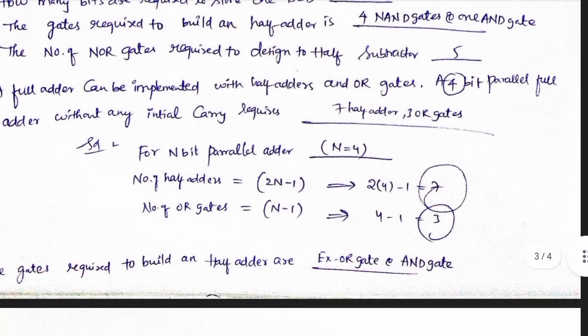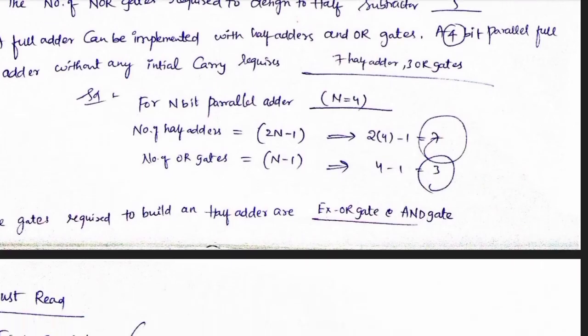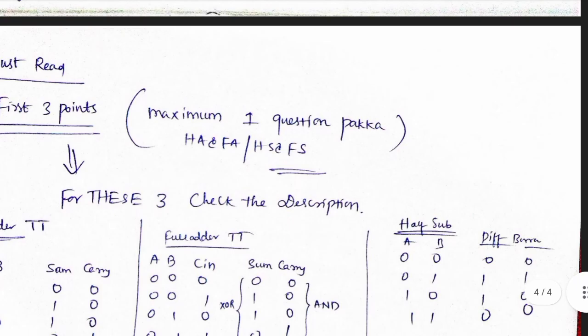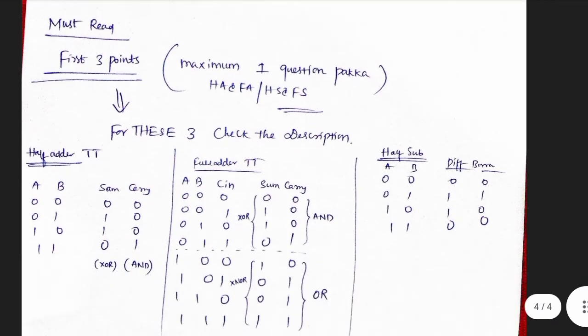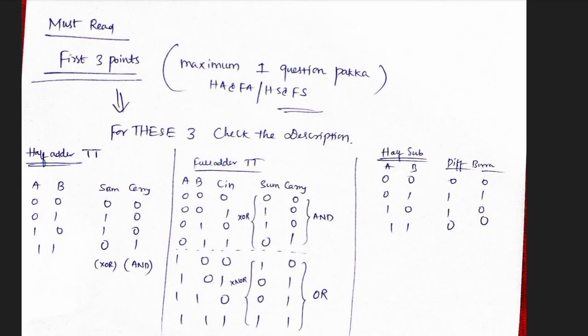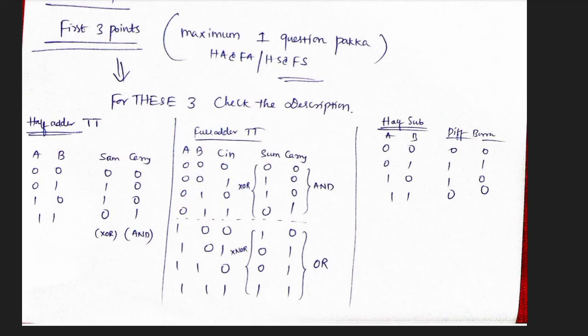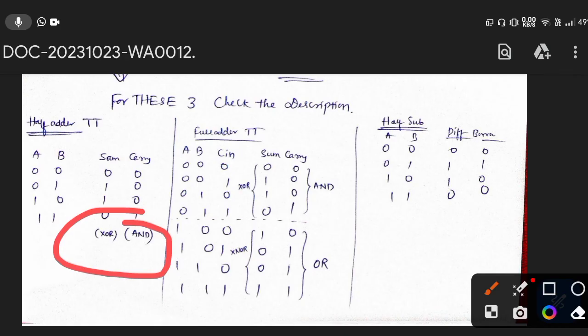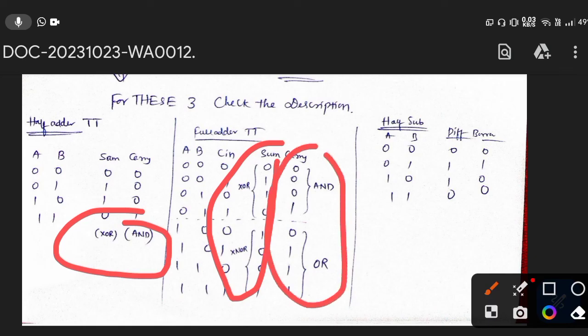The gates required to build a half adder are XOR gate and AND gate. For the truth table of a half adder: 0,0 → 0; 0,1 → 1; 1,0 → 1; 1,1 → 0 (with carry). The sum expression uses XOR and the carry expression uses AND. So the half adder uses XOR and AND gates — that is very simple to know.